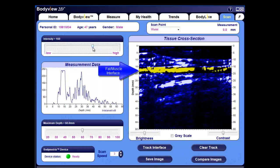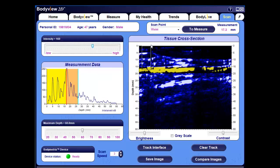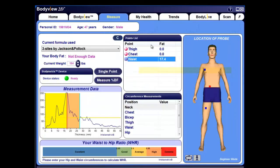Note that if we drag a small rectangle from the center of this fat muscle interface to the top of the image, the total fat thickness, or subcutaneous fat, is measured automatically and displayed here. Note that this coincides with the original site point measurement we took earlier, at 17.4 millimeters.